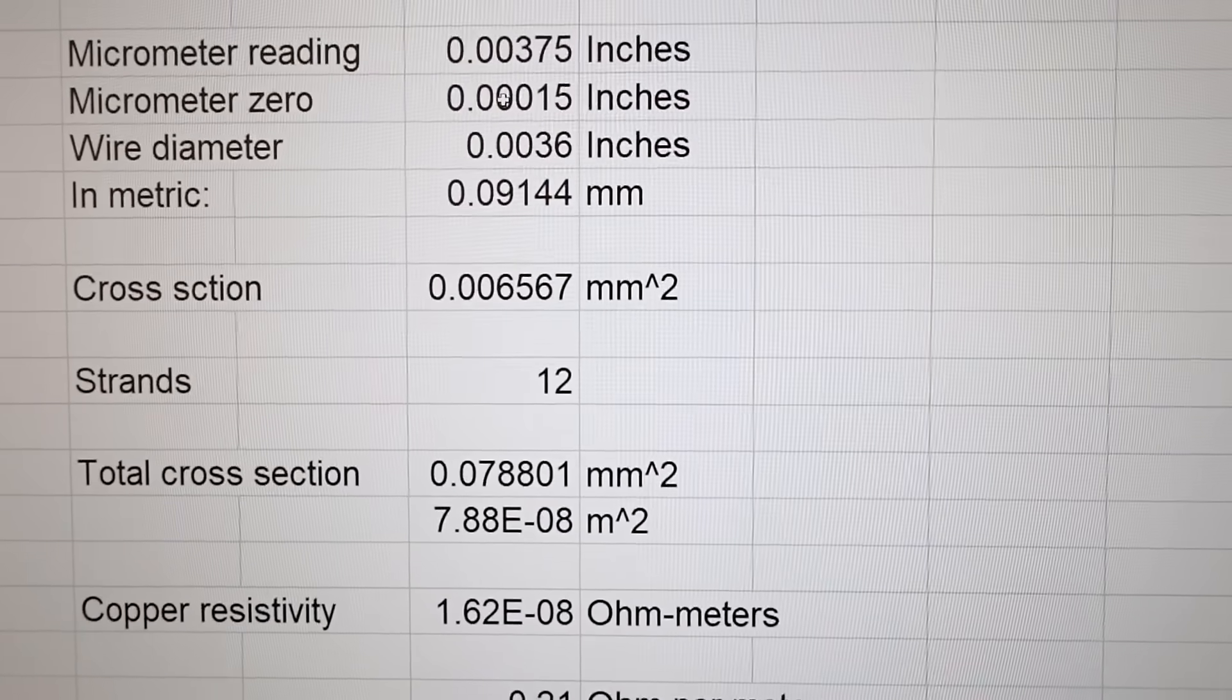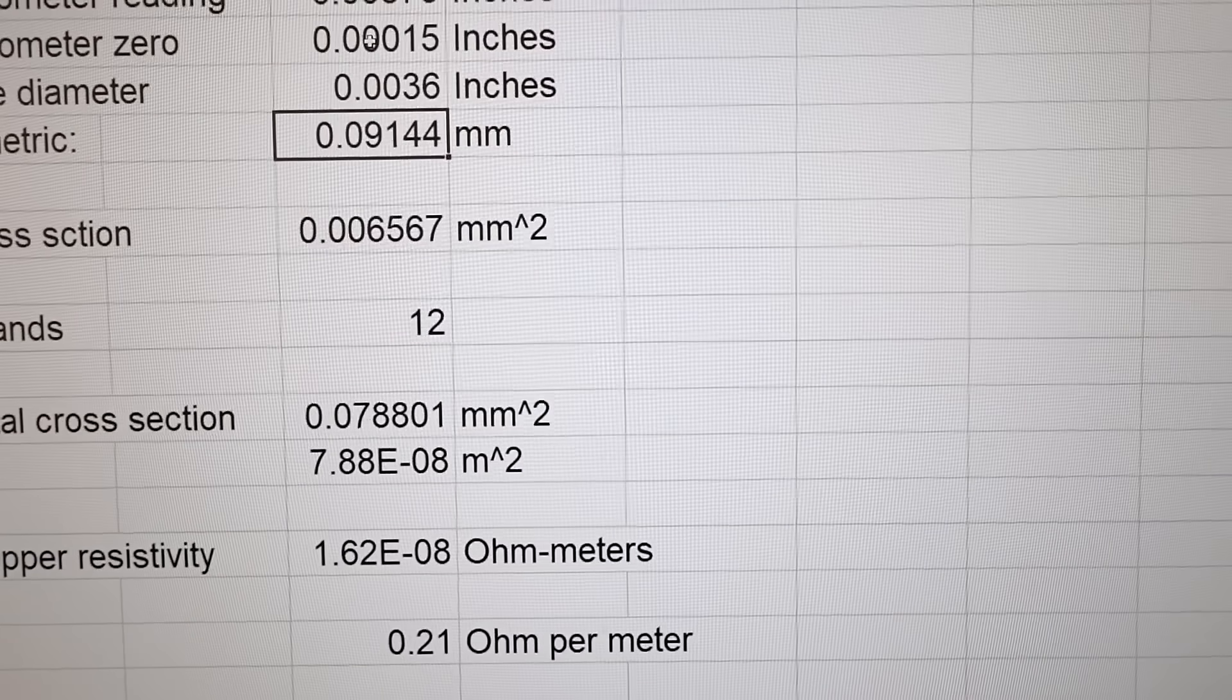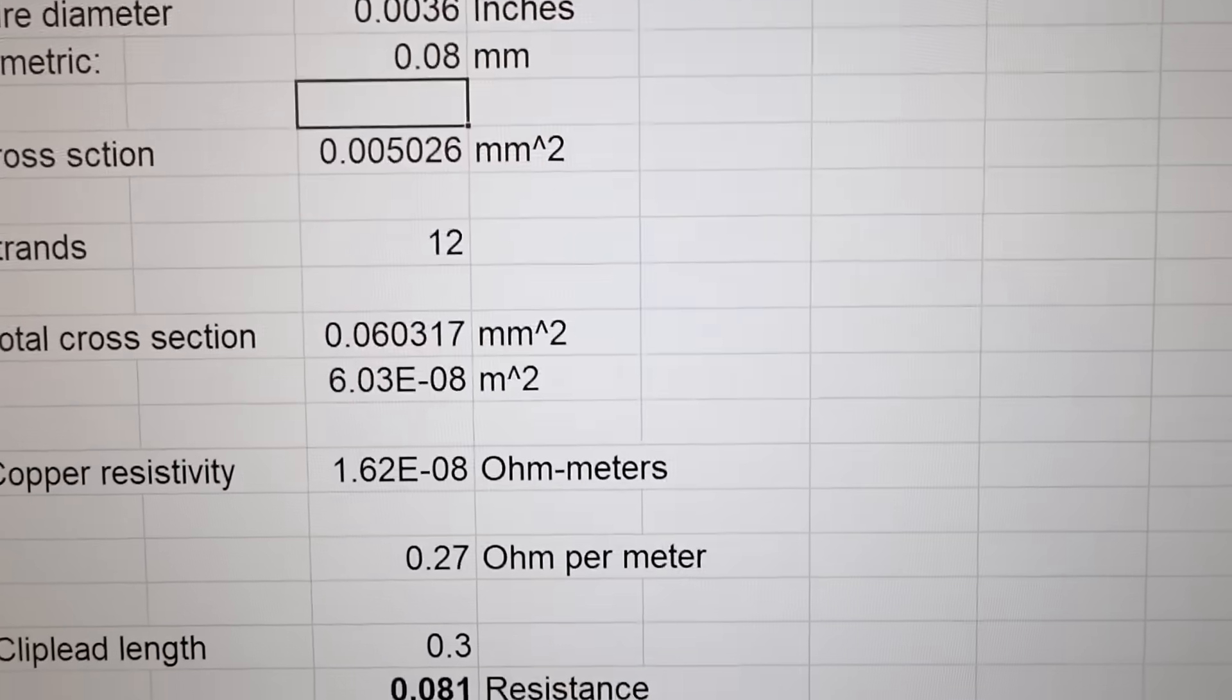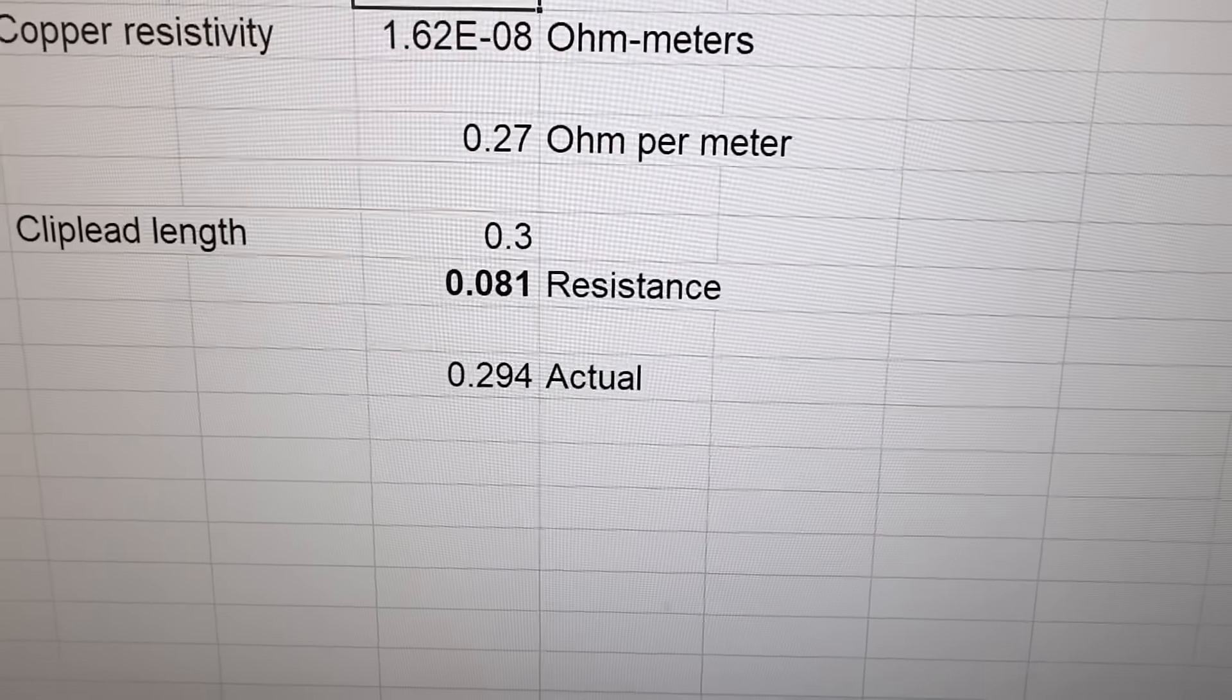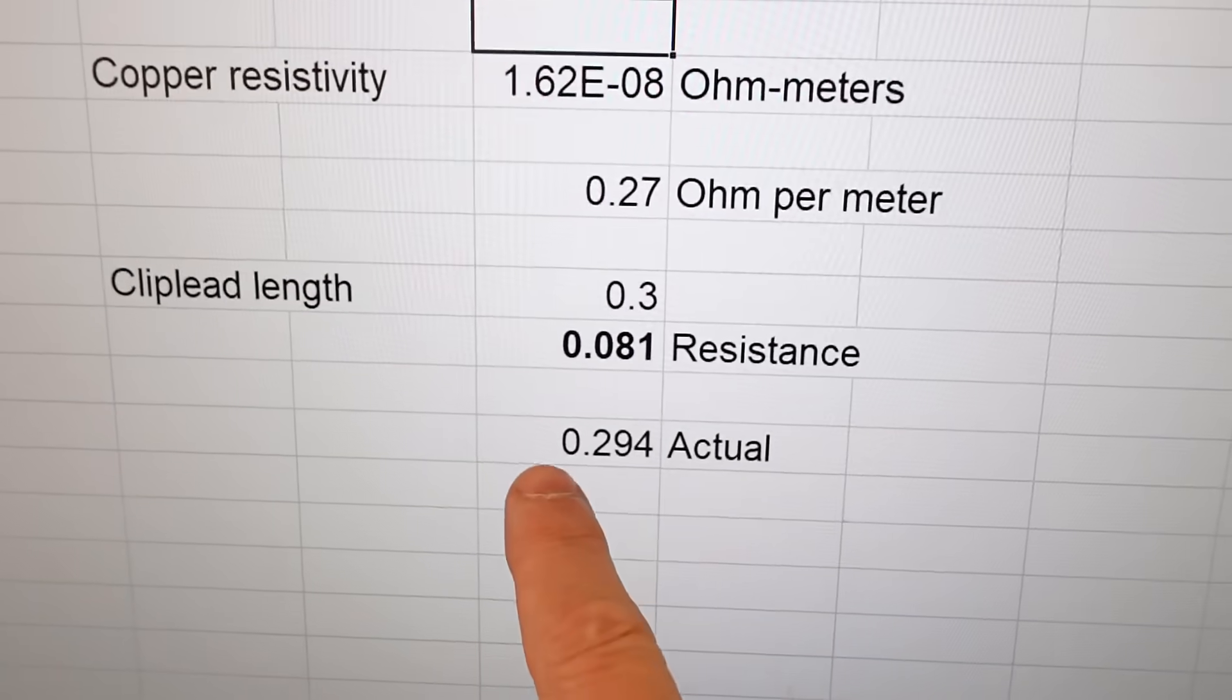So, maybe I should use the metric number that I had from the calipers. 0.08 millimeters. And, now I should be at 81 milliohms. It's still way off.